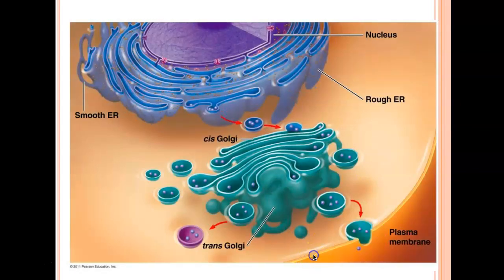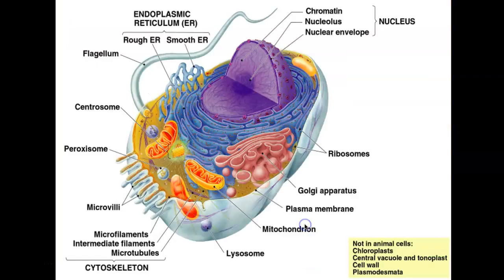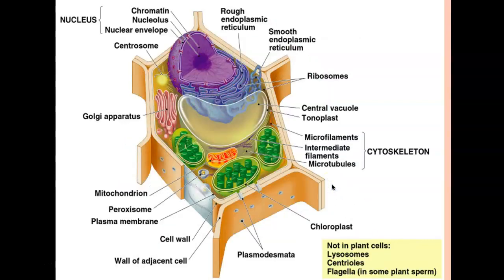Differences and similarities between plant and animal cells: animal cells don't have chloroplasts, a central vacuole, or a cell wall. That's the most important thing — no chloroplasts, no central vacuole, no cell wall. I'm not going to go over any more of that other stuff because I think it's pretty basic.